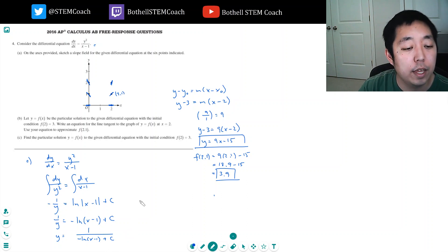Okay. And then I need to solve for the initial value where 3 is equal to 1 over negative natural log of 2 minus 1 plus c. Now, natural log of 1 is 0. So that's just equal to 1 over c. So that means c is equal to 1 third.